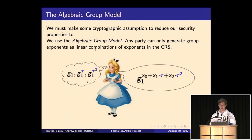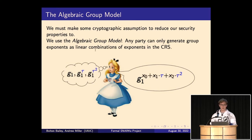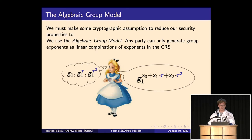What is the cryptographic model behind the theorems we're proving? Almost all of cryptography relies on some kind of model. We're using what's called the Algebraic Group Model. The basic idea is that Alice has G1, G1 to the tau, G1 to the tau squared, and by doing the elliptic curve group operation she can add these elements. But she cannot make group elements in any other way. So any group element Alice produces must be some linear combination of the CRS elements she was given beforehand.